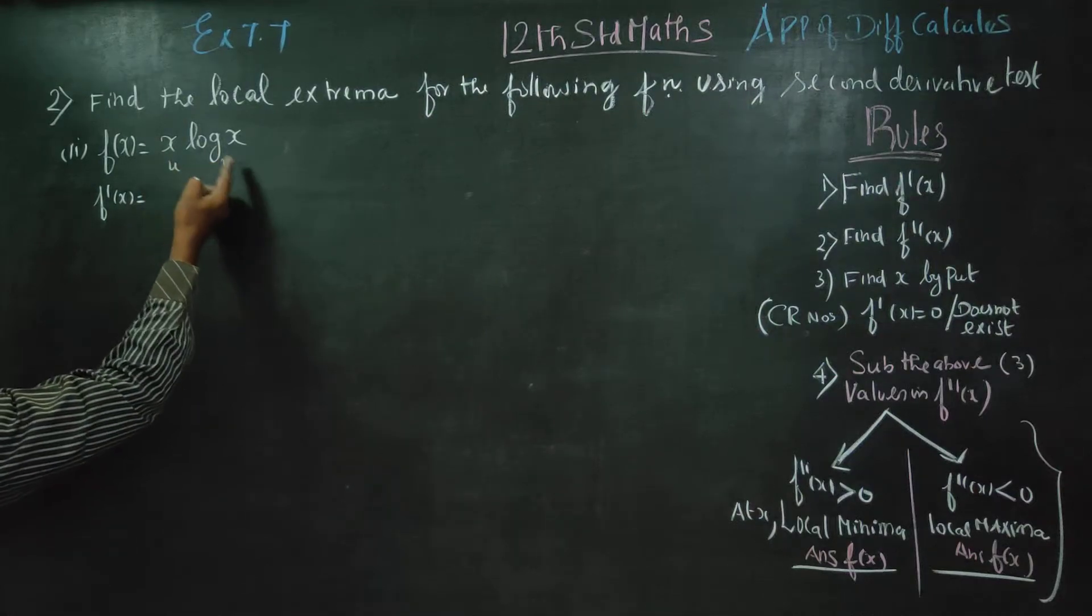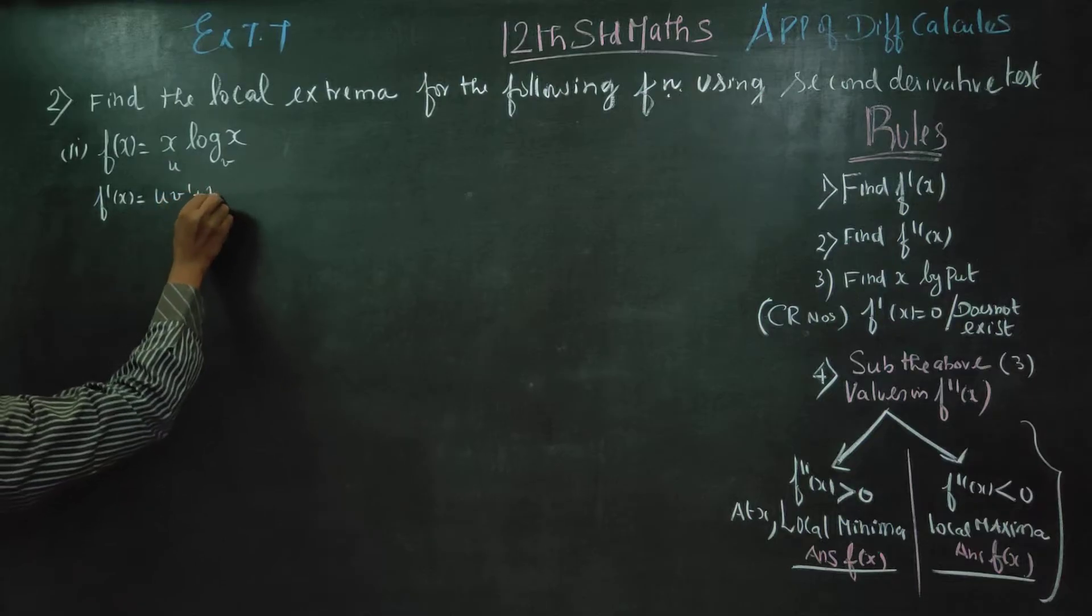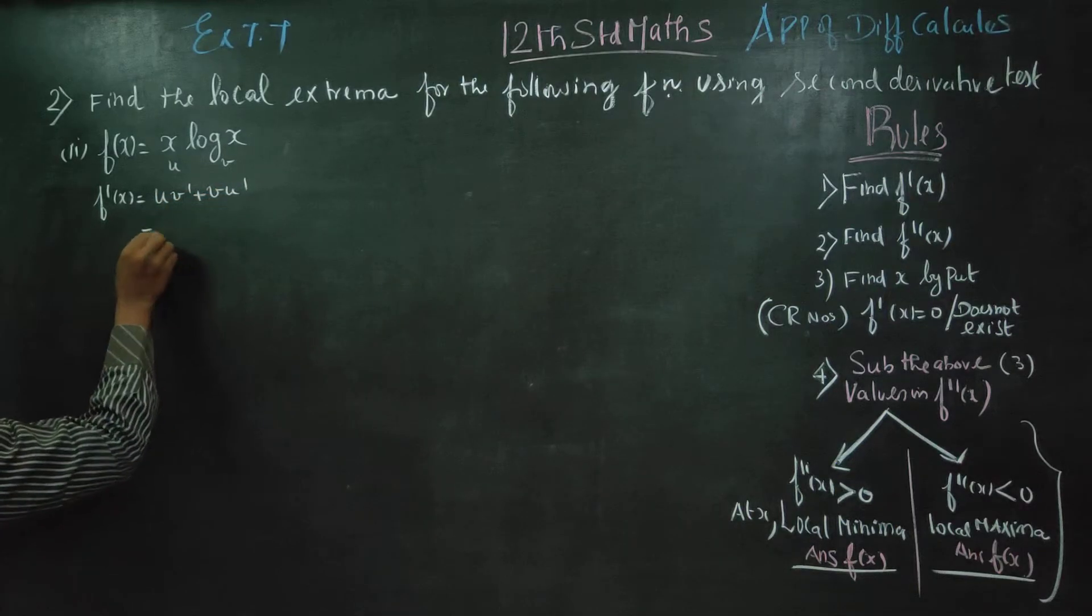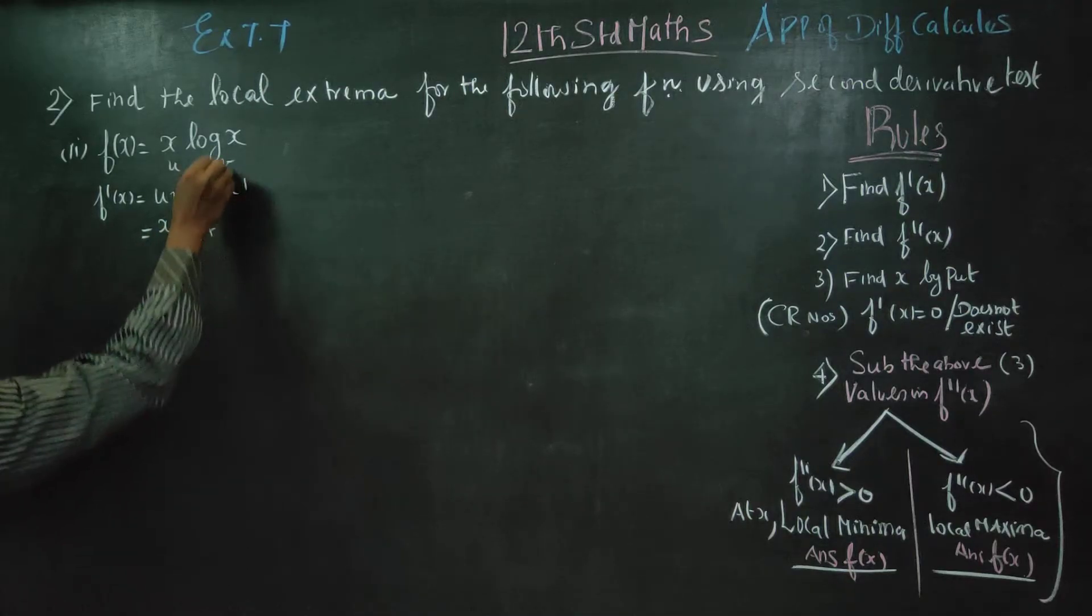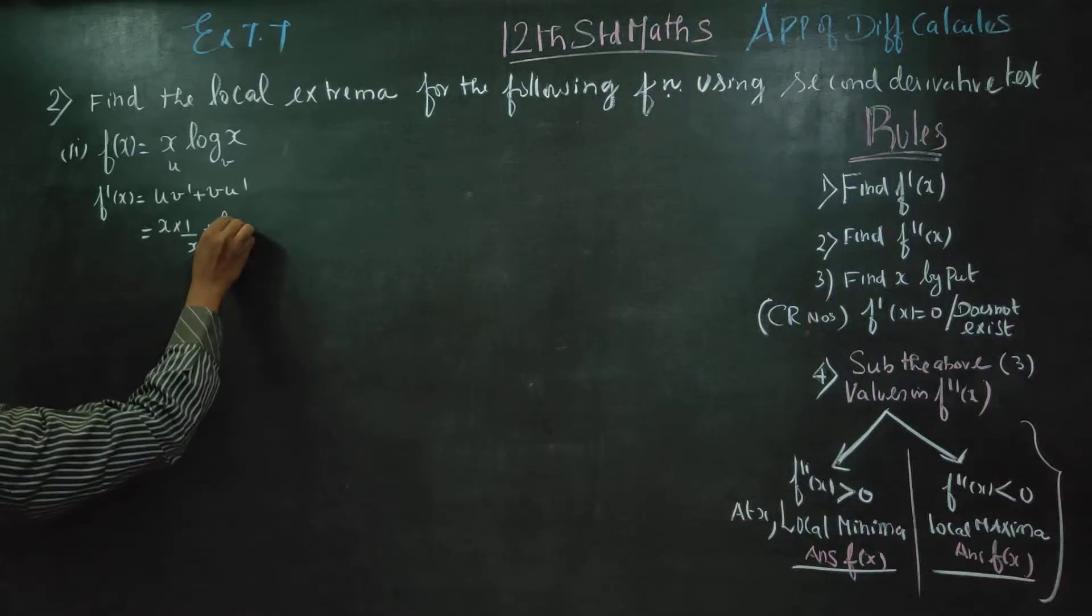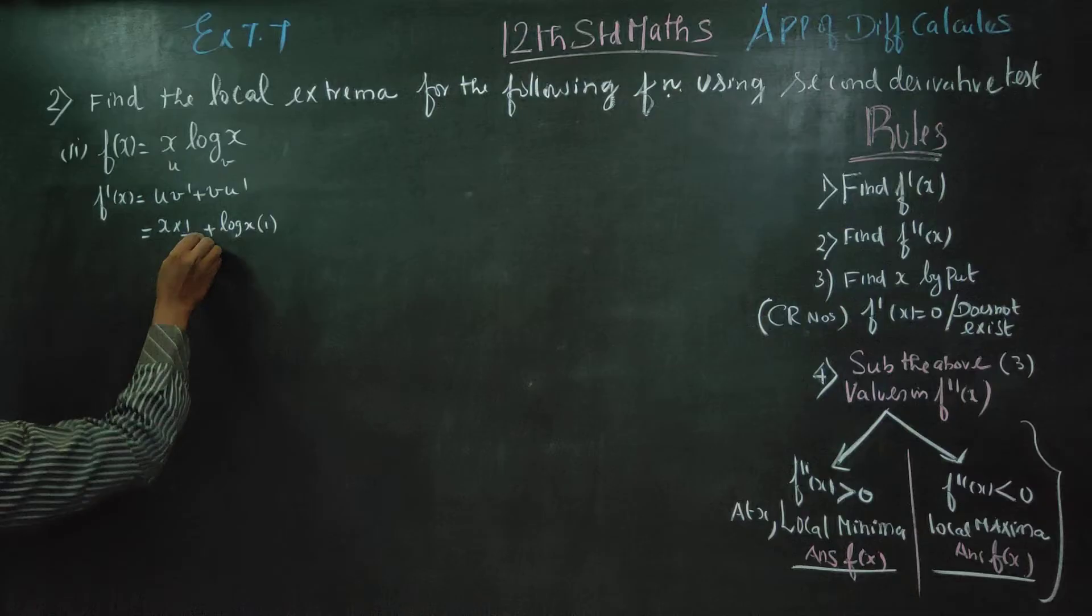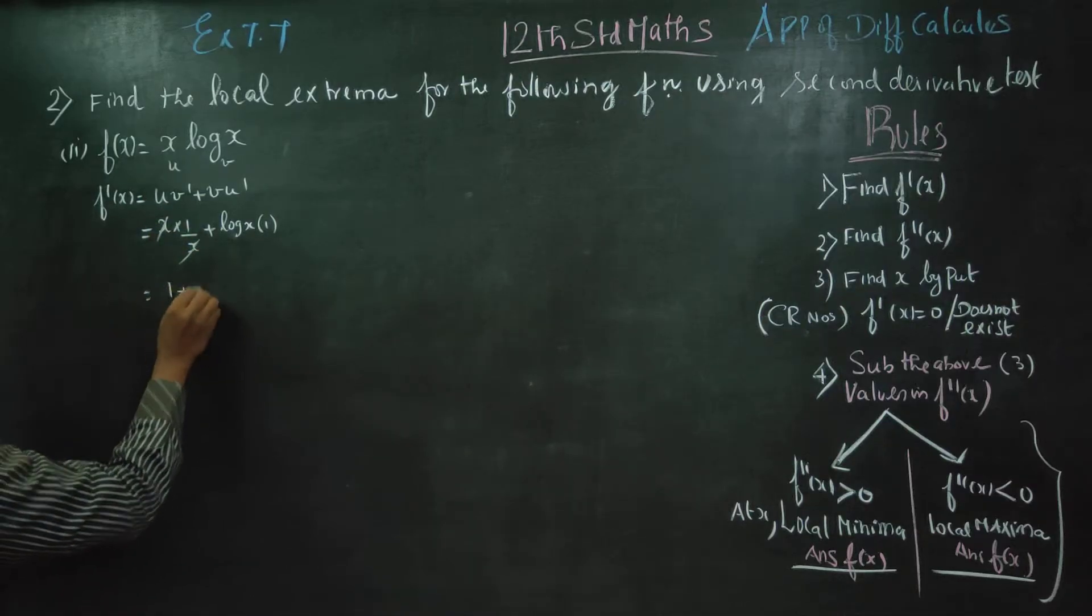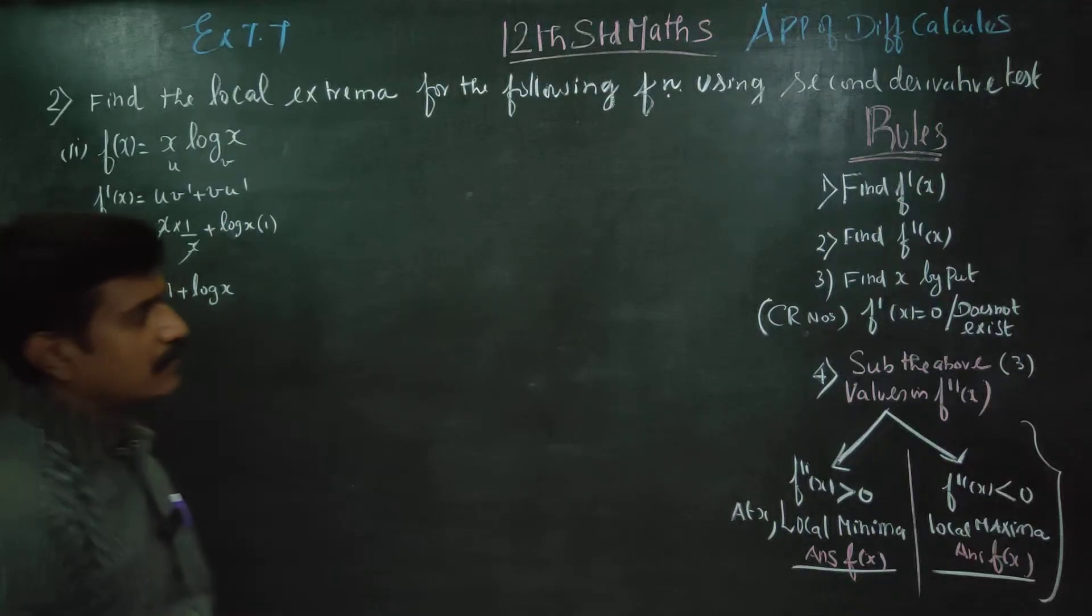Using the product rule, u times v differentiate and v times u differentiate. Here f(x) = x log x. Log x differentiate is 1/x, and x differentiate is 1. This is canceled. Therefore f'(x) = 1 + log x.